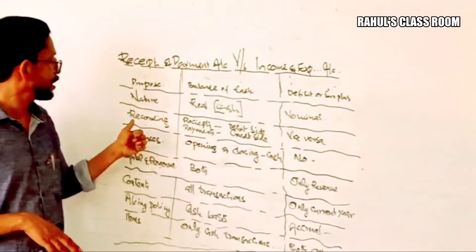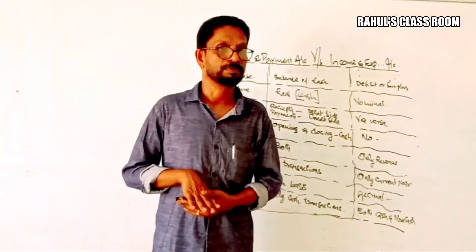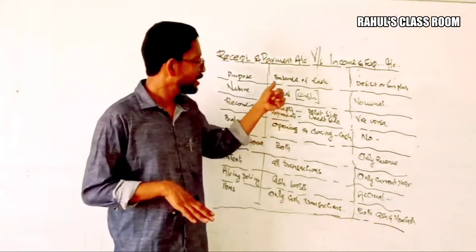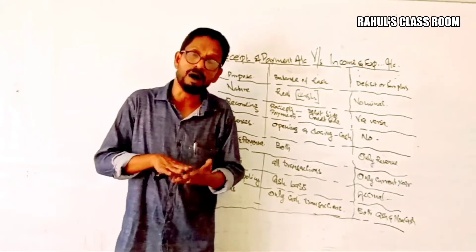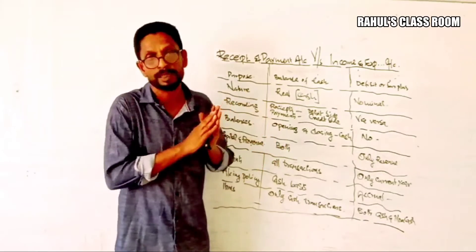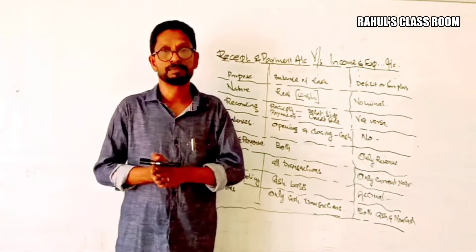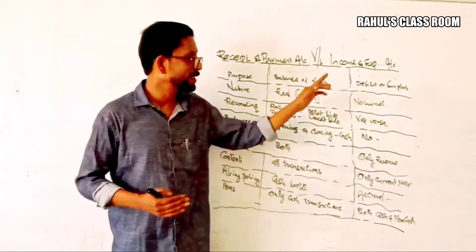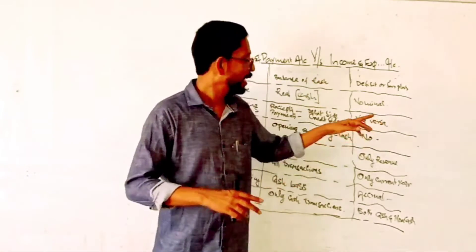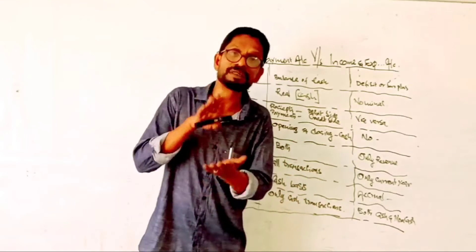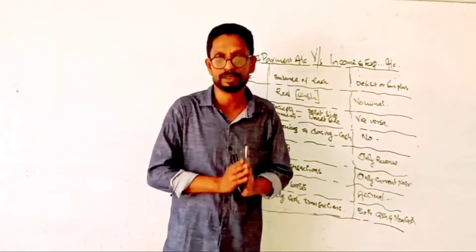The third difference is Recording. In the Receipt and Payment Account, we record all receipts on the debit side and all payments on the credit side. But in the case of the Income and Expenditure Account, we follow the reverse pattern — all income is shown on the credit side and all expenditure is shown on the debit side.